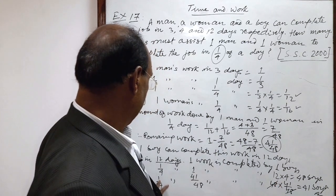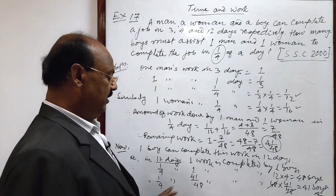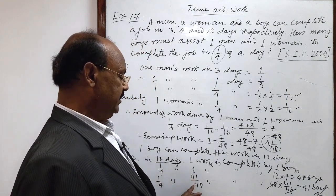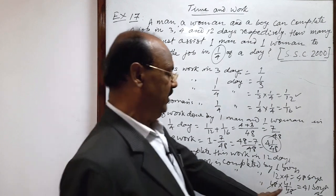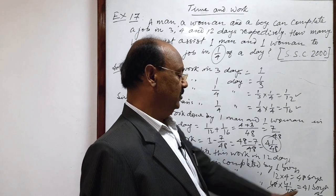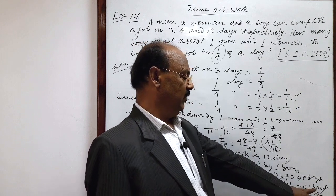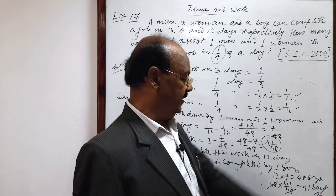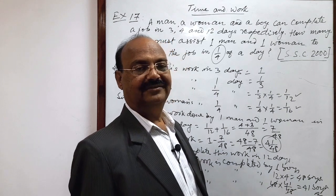So, in same period of time, 1 by 4 day, 41 by 48 amount of work, here it will be multiplied 48 by 41 by 48, so finally, we are getting, number of boys required is 41, this is the correct answer. Fine?